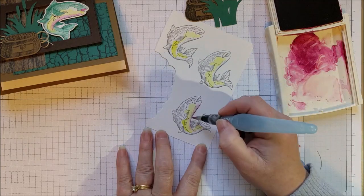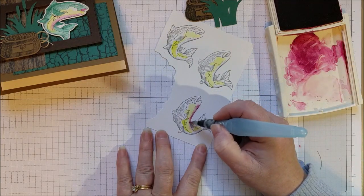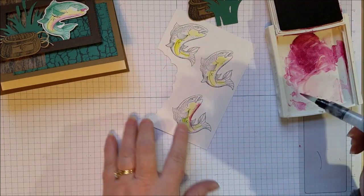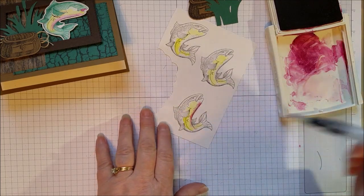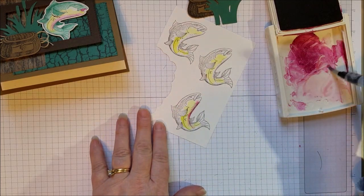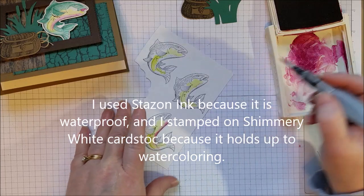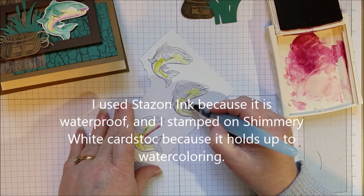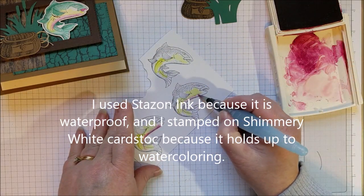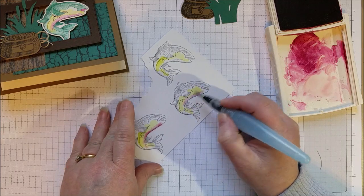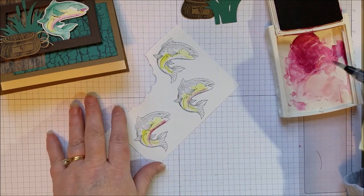Something I should mention, I stamped these fish before the video beforehand. I want to make sure that you know I used Stazon ink because it's waterproof, so you can go like this with your water Aqua Painter and those little images are not going to smear.